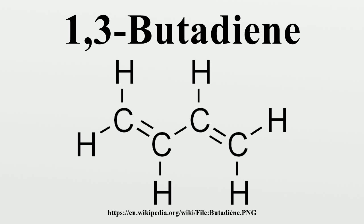The name butadiene can also refer to the isomer 1,2-butadiene, which is a cumulated diene with structure H2C=C=CH-CH3. However, this allene is difficult to prepare and has no industrial significance.